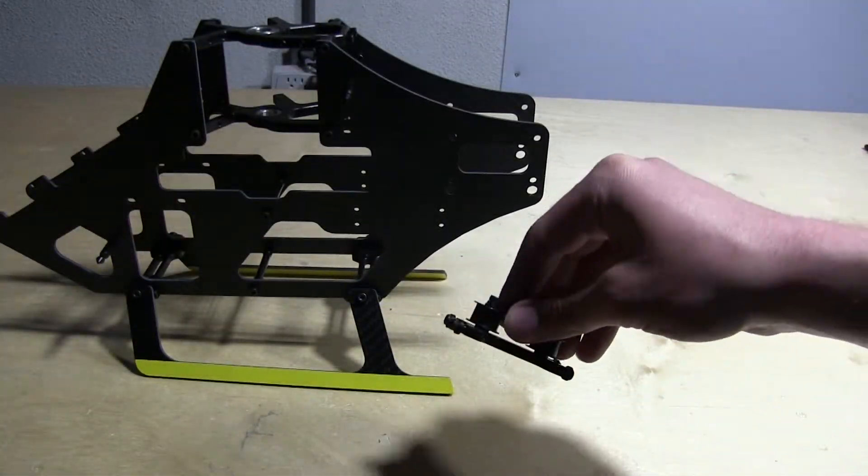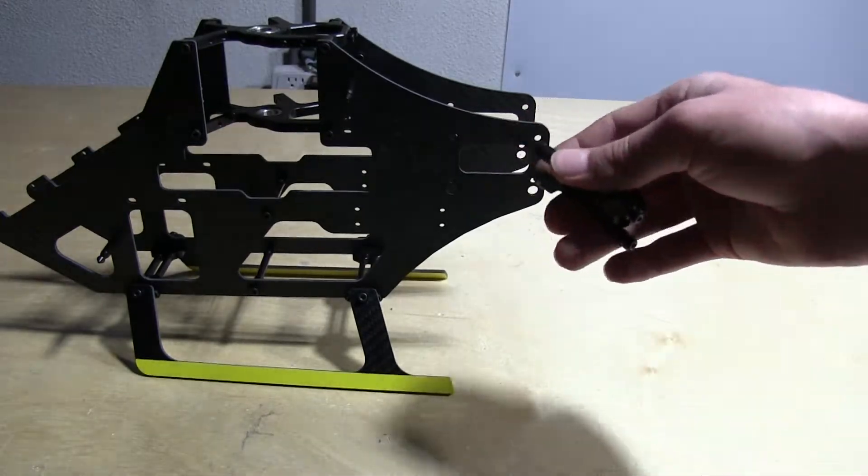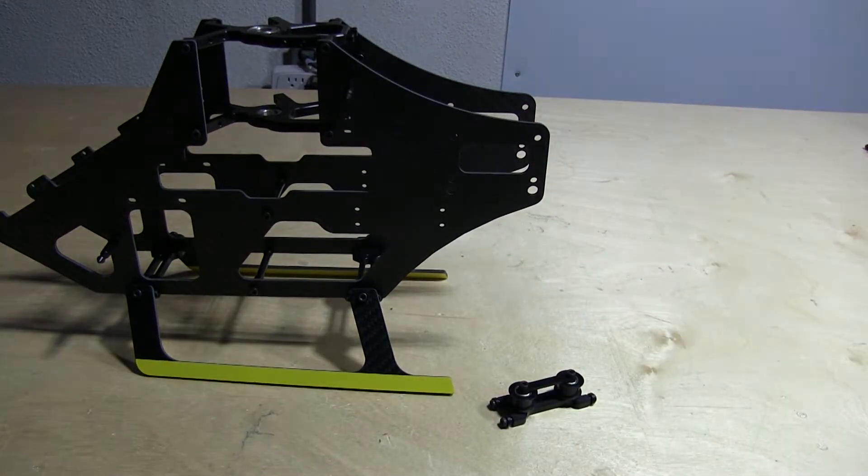Up next we're going to be doing the tail belt guide. It's just four screws going into the back of the frame. Let's go ahead and do that step.